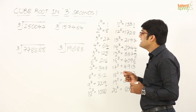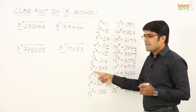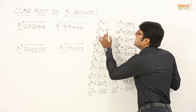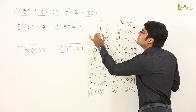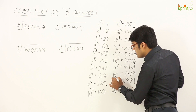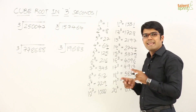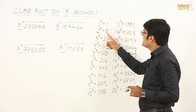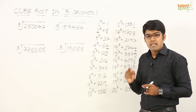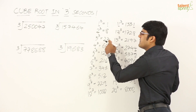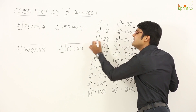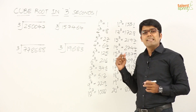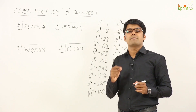The only change we see is in the case of 2, 3, 7, and 8. This is very easy to understand. When the number ends in 8, its cube root ends in 2. But when the number ends in 2, the cube root ends in 8. So 2 and 8 are a pair. The same goes for the other pair: 3 and 7. When a number ends in 7, the cube root ends in 3. And when a number ends in 3, the cube root ends in 7.